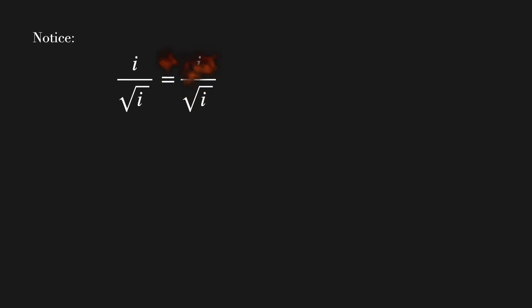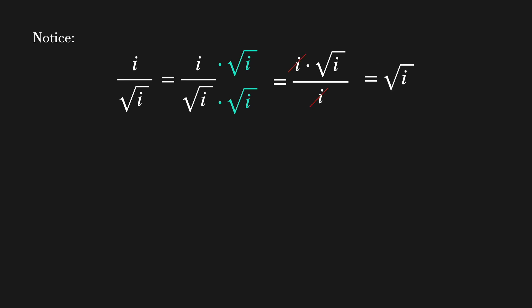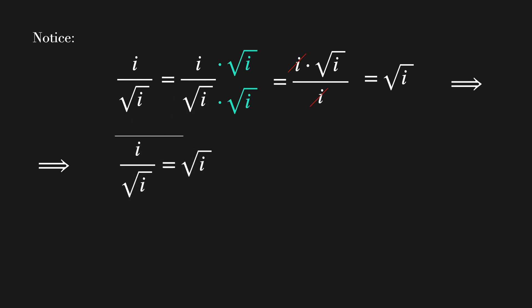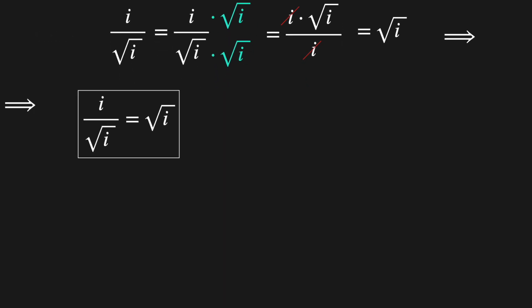Notice that the fraction i over the square root of i can be rationalized by multiplying the numerator and the denominator by the square root of i. Now we can simply cancel out these two imaginary units on the top and on the bottom. And this gives us the square root of i. So we found our first equation: i over the square root of i equals the square root of i.